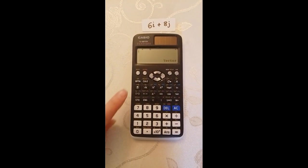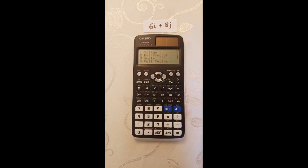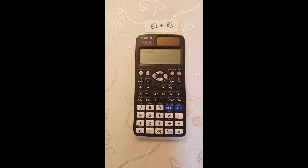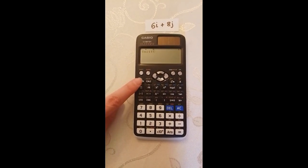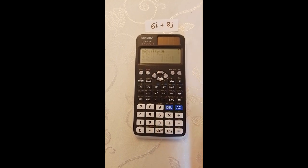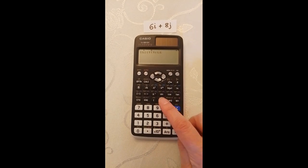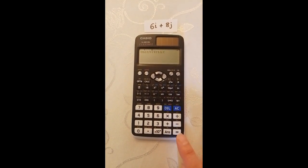Then press option and scroll down and enter 4 because we want to find a unit vector. Then press option again. Press 3 to tell the calculator that we're finding the unit vector of vector A. Then close brackets and then press equals.